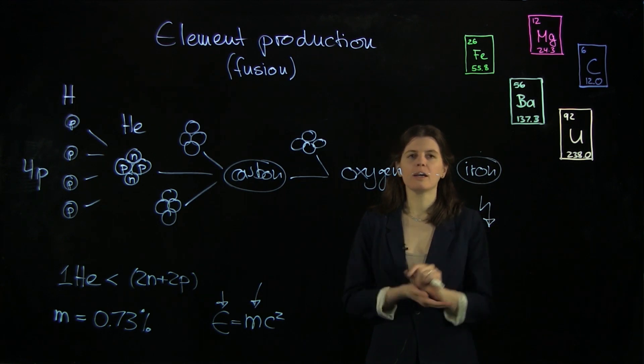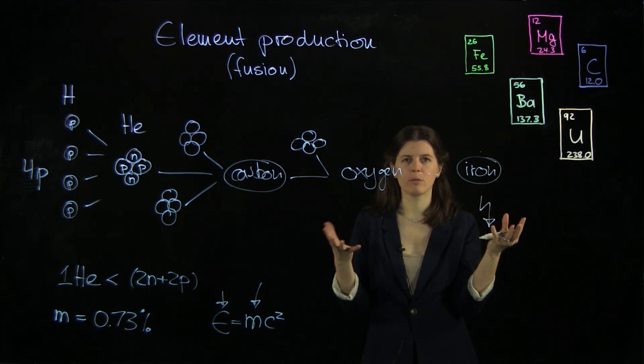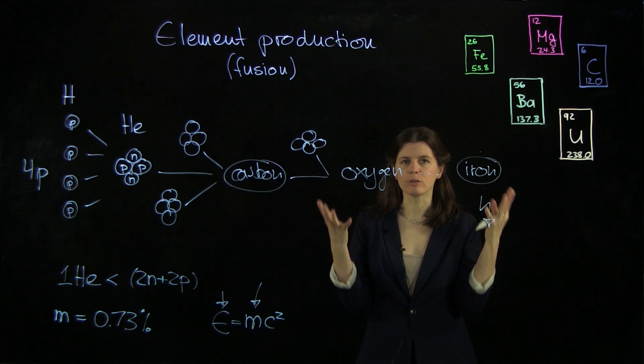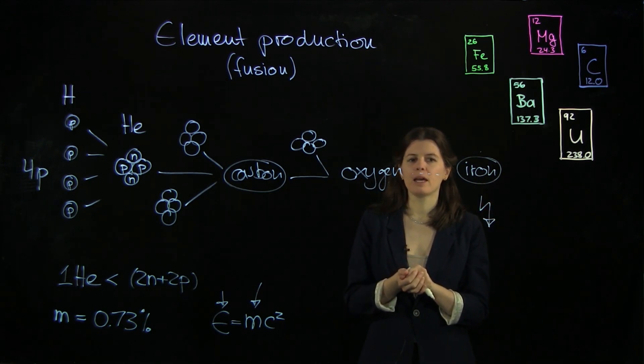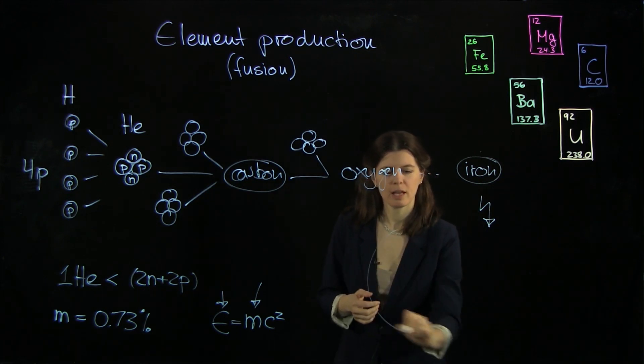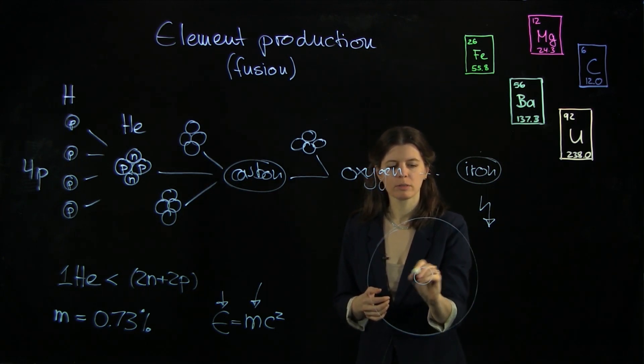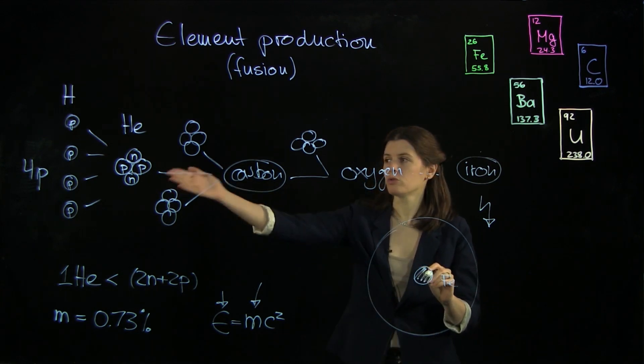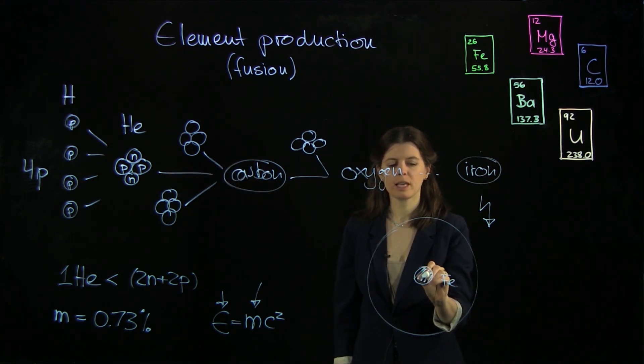So obviously, the star is going to have a big problem because it doesn't want to put energy in and want to get energy out. And that's why in the end, the star ends up with an iron core. So this is an iron core here.